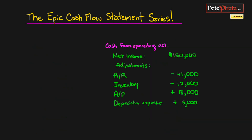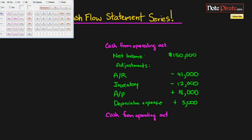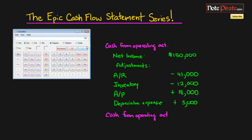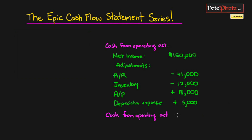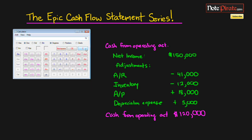The entire operating activities section comes down to these four adjustments. Cash from operating activities is: 150 minus 41, minus 12, plus 18, plus 5 — which equals one hundred and twenty thousand dollars. Let me double-check: 150 minus 41, minus 12, plus 18, plus 5 — yes, one hundred and twenty thousand dollars.